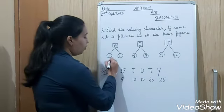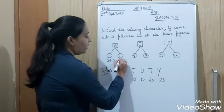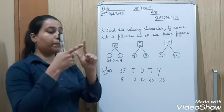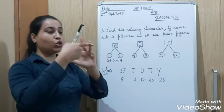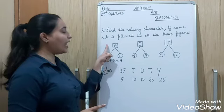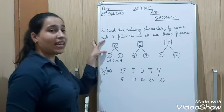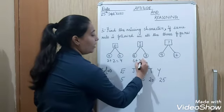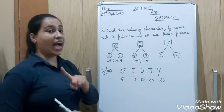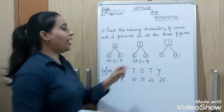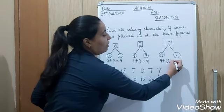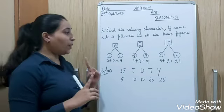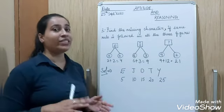Now see here, add these both numbers, 2 plus 2, what you will get? 4. Now you can see, D is on 4th position: A, B, C, D. So D is on 4th position. Now see here, 6 plus 3, what is 9? 9th place has which character? I. Now here add 9 plus 12, what is 21. Now it will take time to figure out which character comes at 21st place.